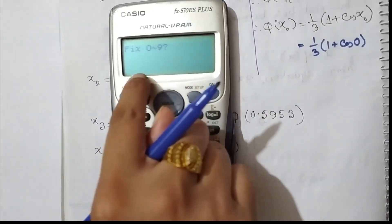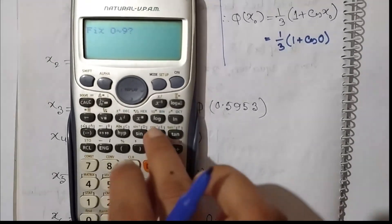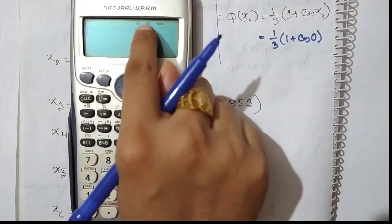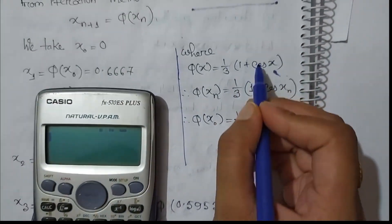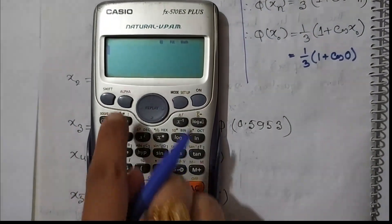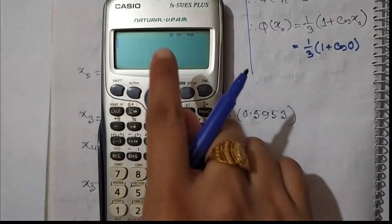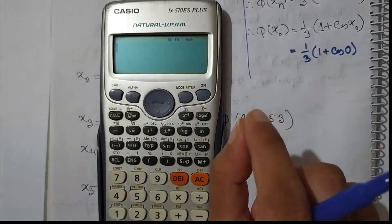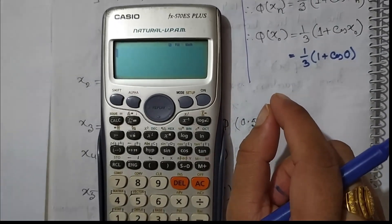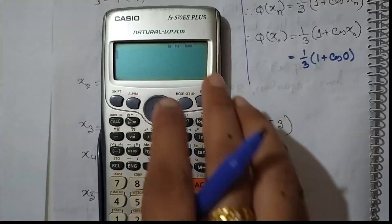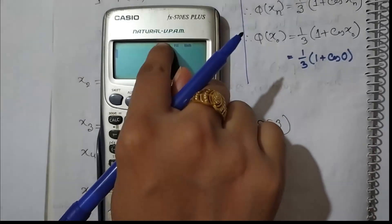We press fix and select 4 decimal places. The calculator is now in radian mode. We press shift, then radians - so we are in radian mode. Now fix 4 decimal places. The mode is radian, and the decimal place is fixed to 4.